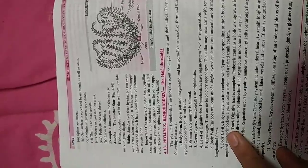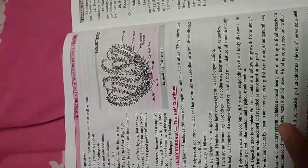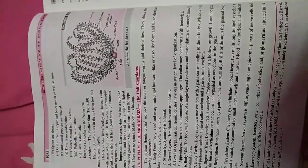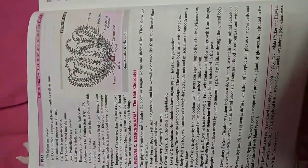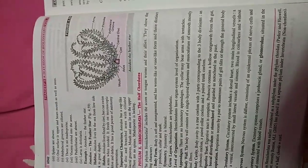Body cavity is a true coelom with three parts corresponding to each of the three body divisions. Digestive tract is complete. Respiration occurs by numerous pairs of gill slits and through the general body surface. Circulatory system includes a dorsal heart and two main longitudinal vessels. Nervous system is diffuse, consisting of epidermal plexus of nerve cells and nerve fibers. Excretory system comprises the proboscis gland.